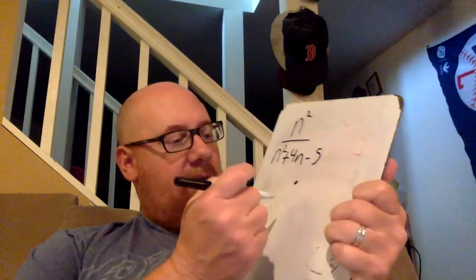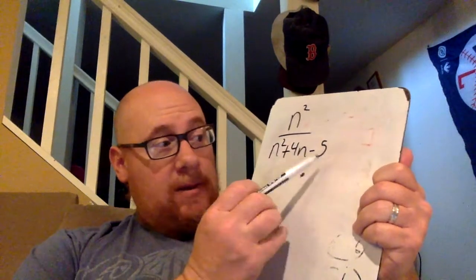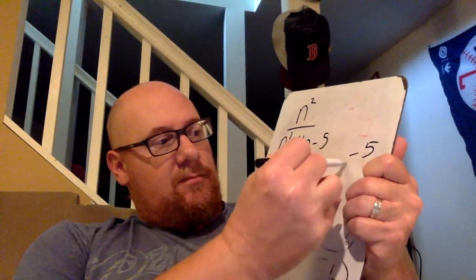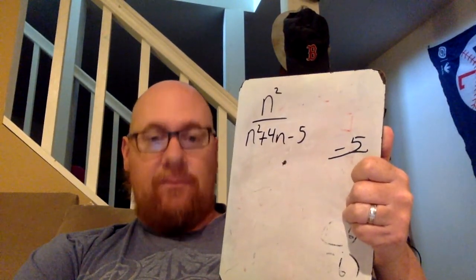Okay, so this is a rational expression. And to factor this one is a little bit different. Jog your memory a little bit. The C term is negative five. So I have to find the factors of negative five that when added together give us four.